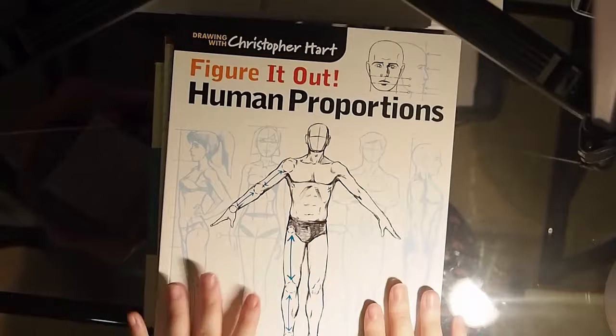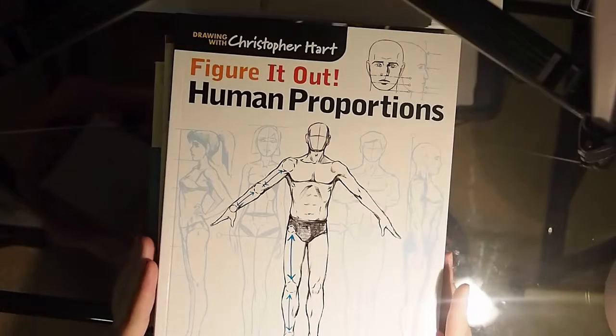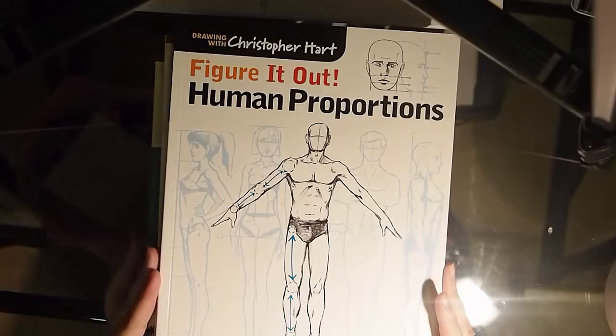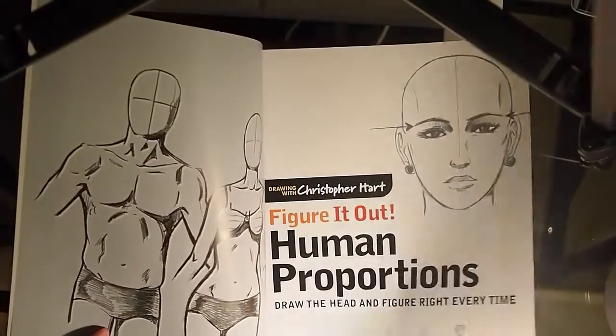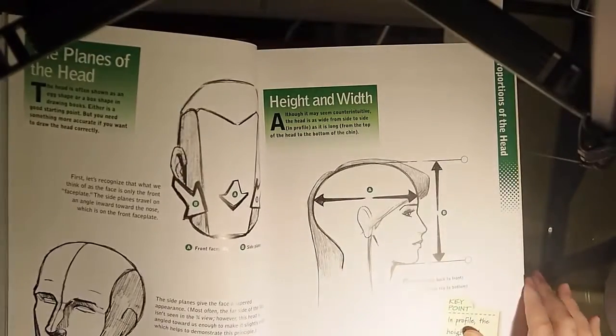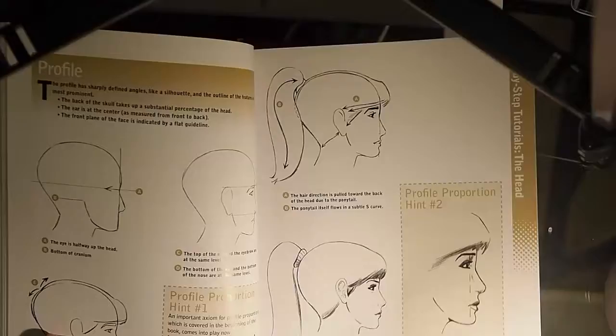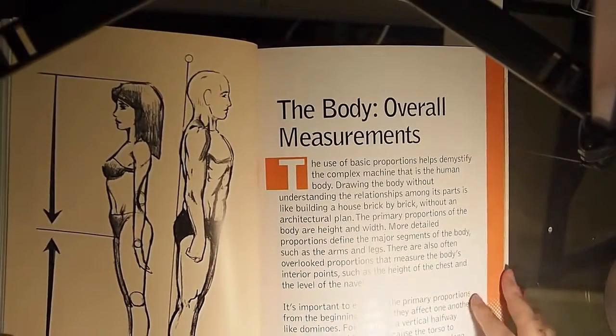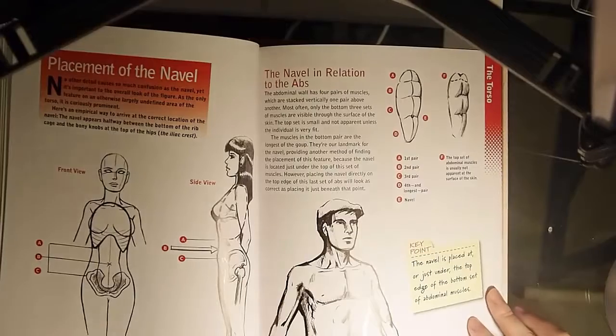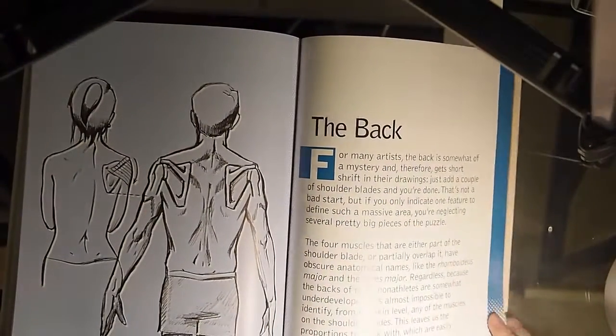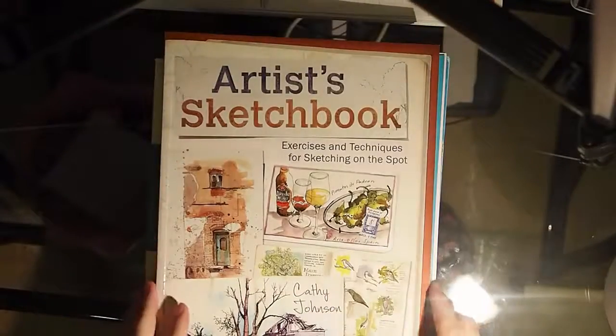I got this book in Barnes & Noble. I've really been having trouble with human proportions. So I looked through a lot of human proportions books and this is the one I liked the art style in the most. It's called Drawing with Christopher Hart, Figure It Out, Human Proportions. The art style is very not completely hyperreal, which I hate hyperrealism. It looks very sketchy and I liked the art style in this a lot more than the hyperreal ones.